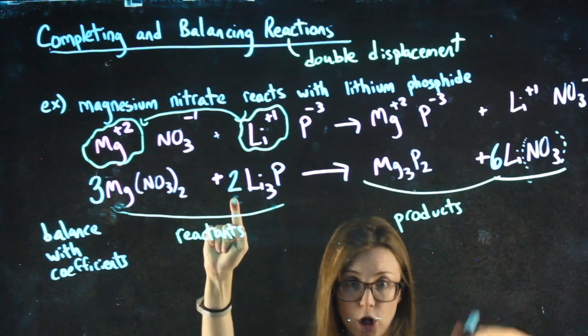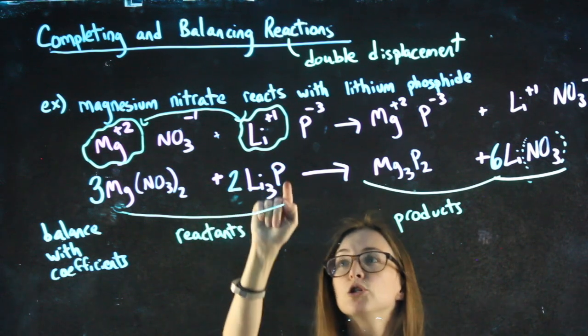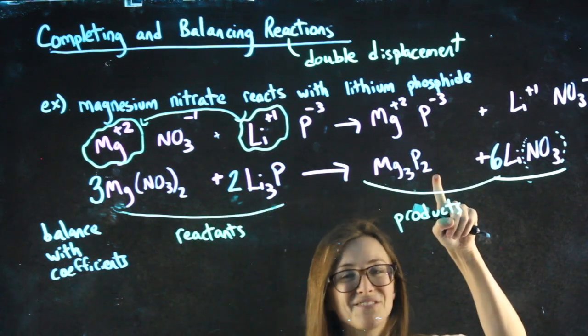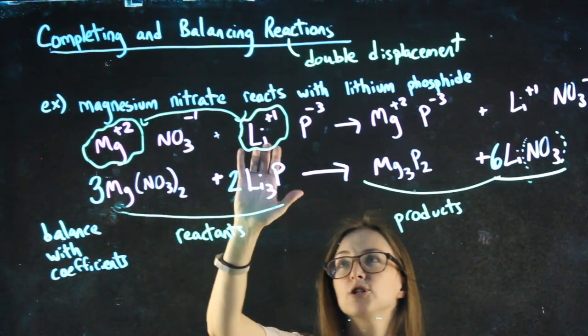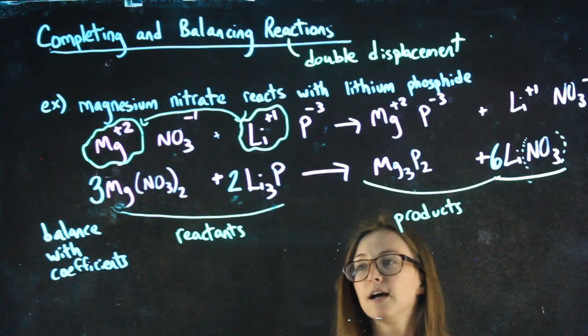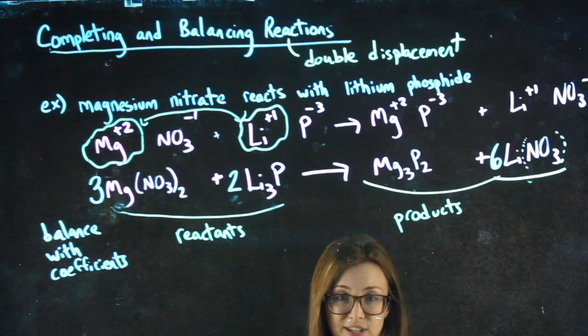What else did this two affect? Domino it through. Two phosphoruses. Hey, I have two phosphoruses. I'm good. I've looked at every single ion, the magnesium, the nitrate, the lithium, the phosphorus, every single part of it, and made sure I have the same number on each side.